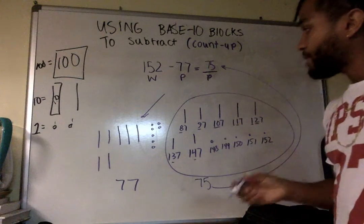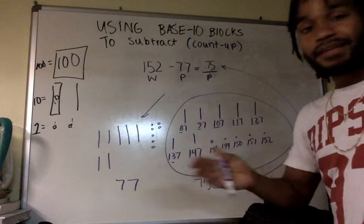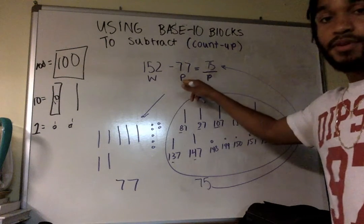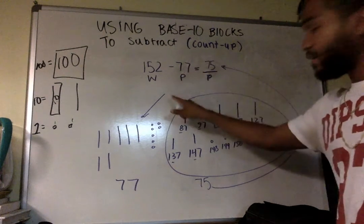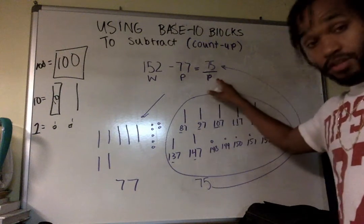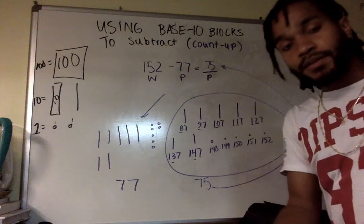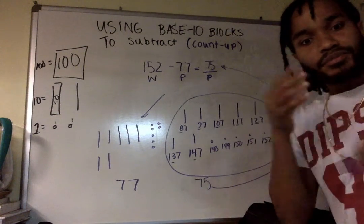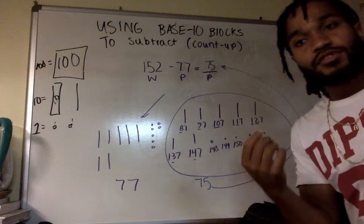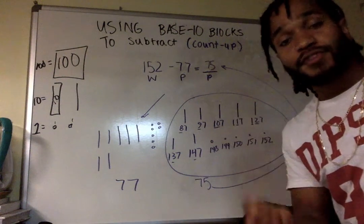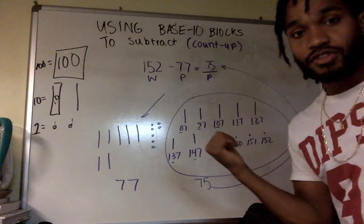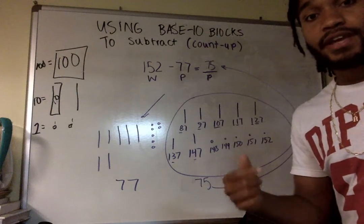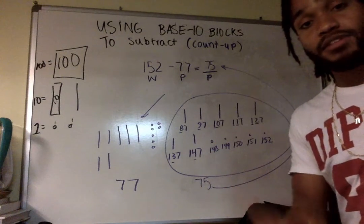Once again, this is using base-10 blocks but not crossing out anything. You're counting up from the part up to the whole and then whatever you're adding on is your other part. So we do this on the number line also. There are multiple strategies, multiple representations. It's just whatever your child feels the most comfortable with and is the most effective with. Just wanted to show you.